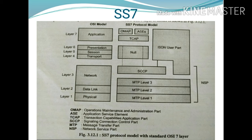The different functions are carried out with the help of three levels of the Message Transfer Part. MTP Level 1 provides an interface to the actual physical channel over which communication takes place. This physical channel may be coaxial cable, fiber optic cable, or satellite links. It also defines the electrical characteristics of the physical channel, with data transmission rates up to 54 to 64 kbps.